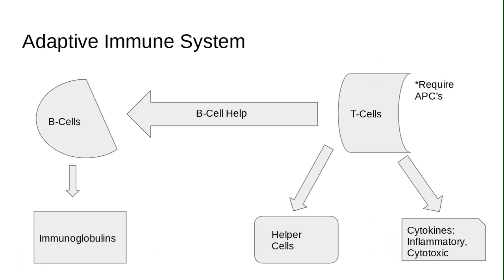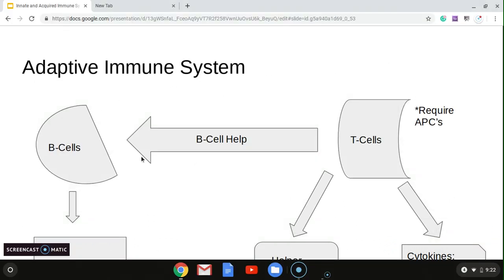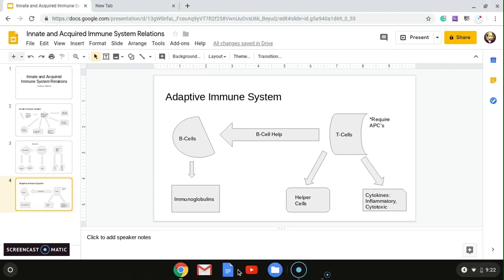These cytotoxic T cells are related to the natural killer cells. Overall, you can see that these complex systems found in the innate and adaptive immune systems build off each other in order to learn from invaders and swiftly suppress and destroy them. Thank you.